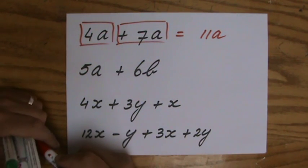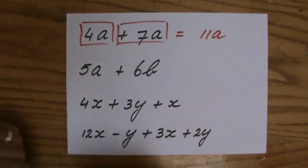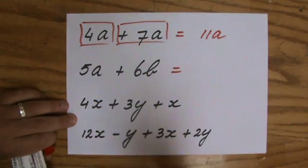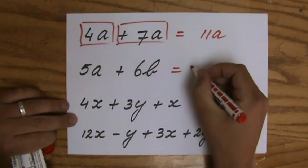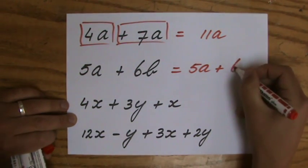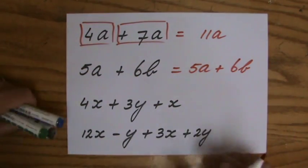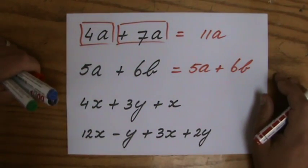5A plus 6B, if I would have to simplify that expression, what is the answer? Are there any like terms? No, they're not, so the answer is 5A plus 6B. Do not get confused, they're not like terms, I can't add apples with bananas.